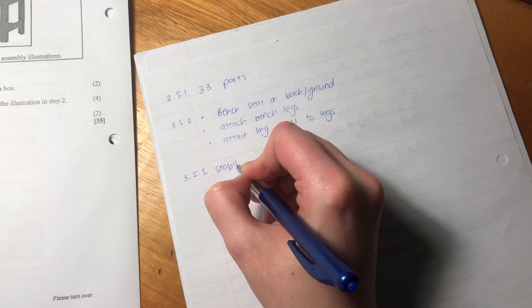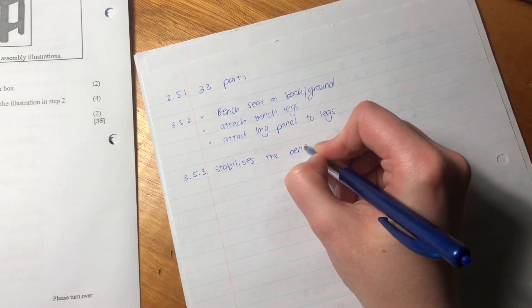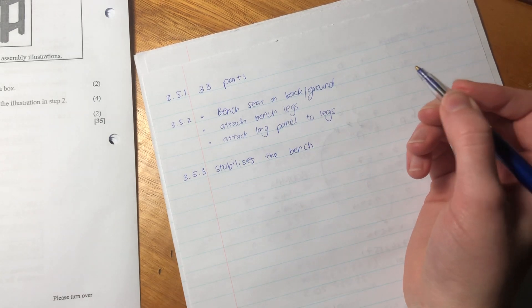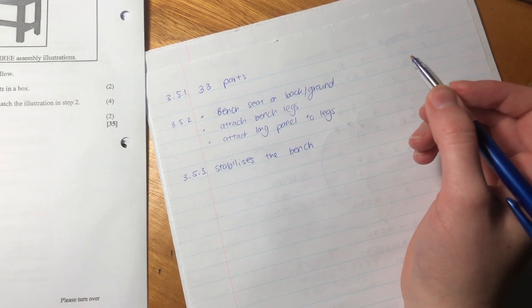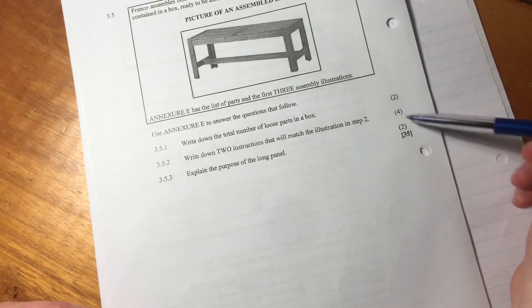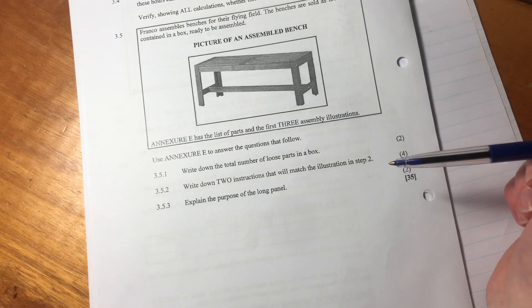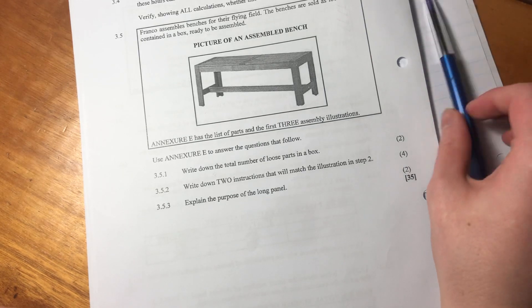So we're going to say stabilizes the bench. So that question was kind of a weird one, right? There was very little math, but it's actually eight marks, right? So it's not too difficult. So that is the end of question three, and we'll be going on to question four next.